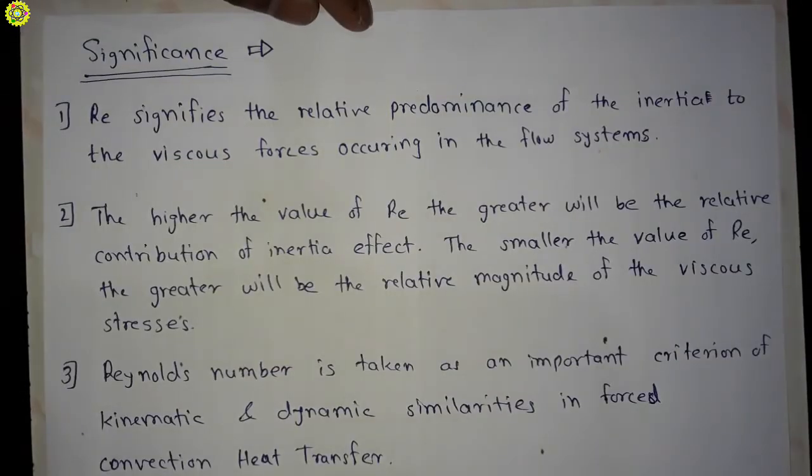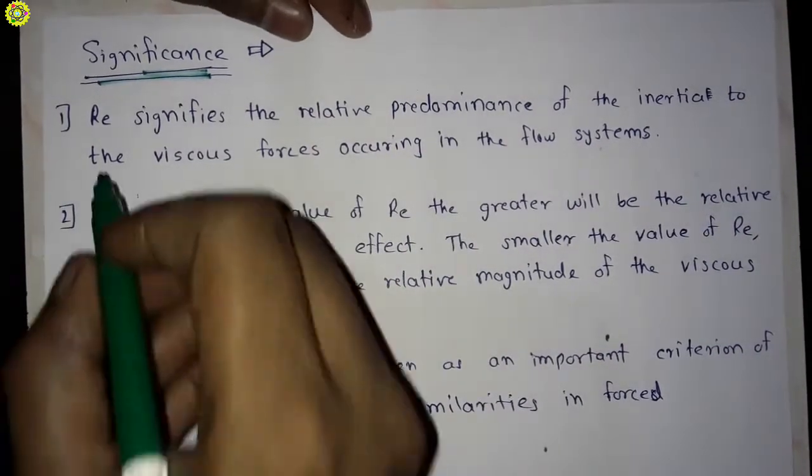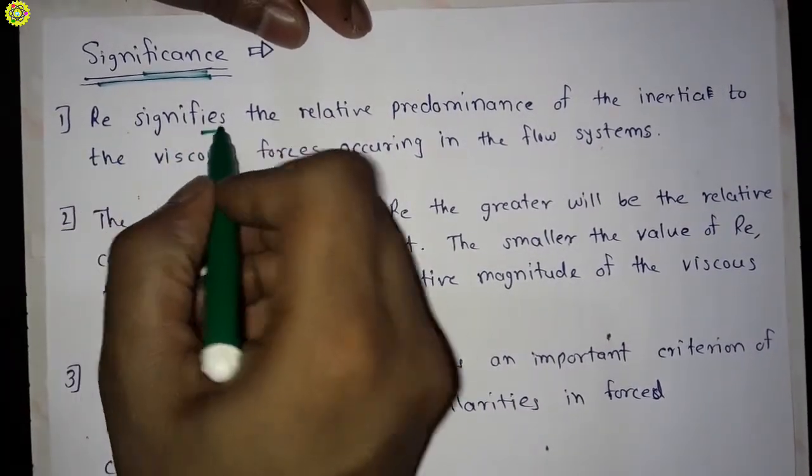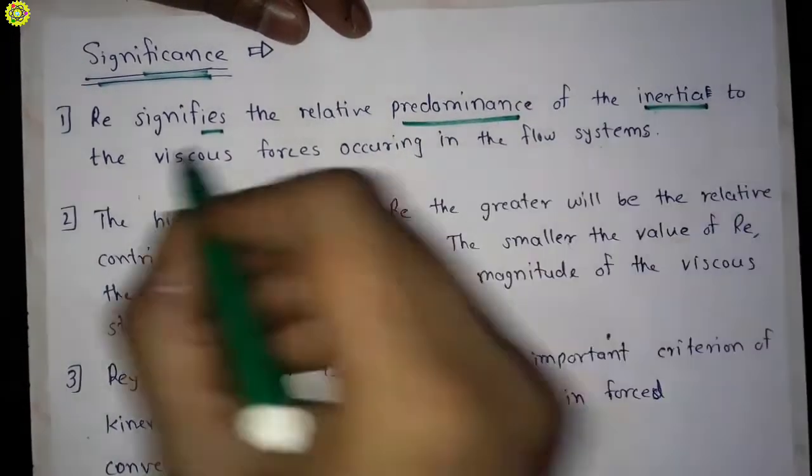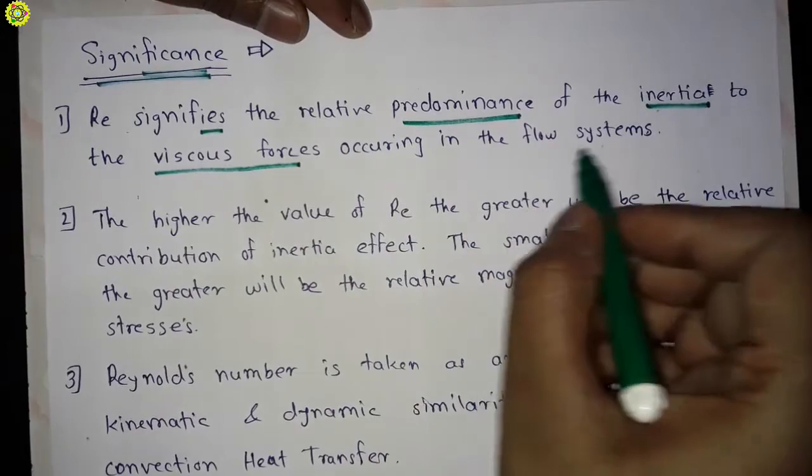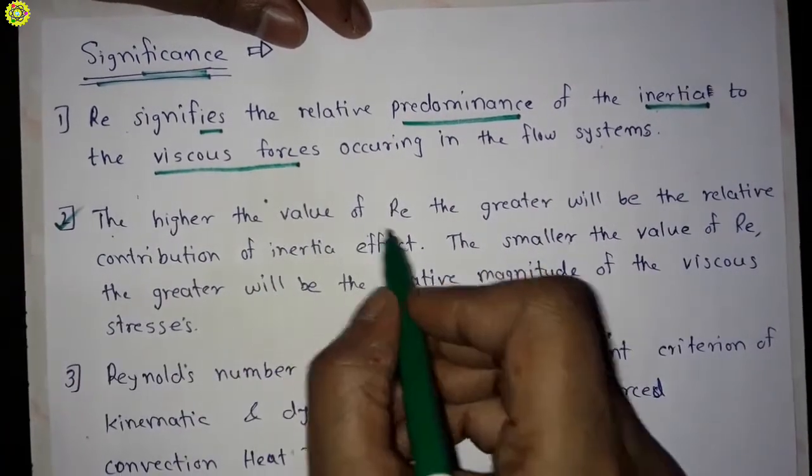Now see here, friends, significance of Reynolds number. First is Reynolds number signifies the relative predominance of the inertia to viscous force occurring in the flow systems. Second is the higher the value of Reynolds number, the greater will be the relative contribution of inertia effect.